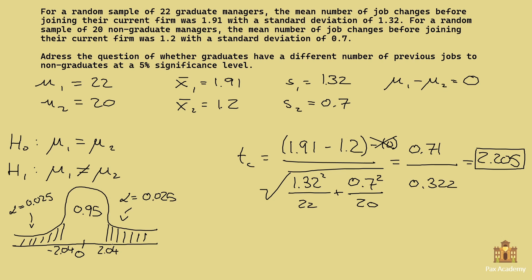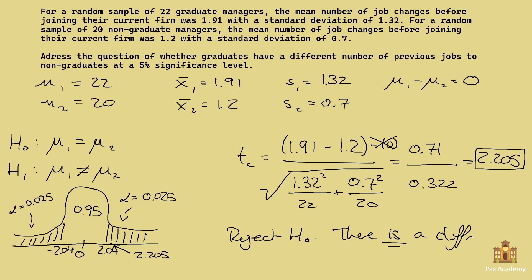Let's locate 2.205 on the graph. Since 2.205 is bigger than 2.04, this value falls inside the rejection region. Therefore, we reject H0. In words, because we reject H0 — which stated there is no difference — we can conclude that there is a difference. We reject H0, so H1 is true: mu1 is not equal to mu2, meaning there is a difference in the number of previous jobs between graduates and non-graduates.